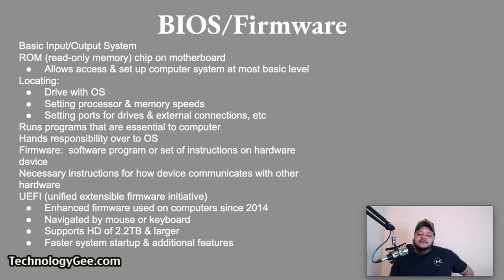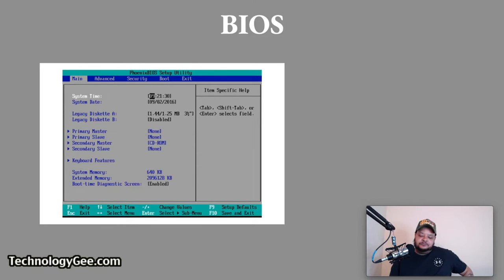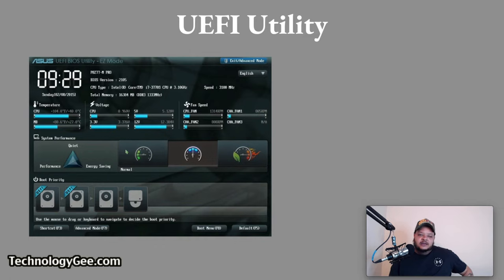UEFI firmware can be navigated with a mouse or a keyboard. It supports hard drives up to 2.2 terabytes and larger, and provides faster startup as well as additional features. Here is a screenshot of what you'll see if you go into the legacy BIOS — you have to use your keys and Tab button to navigate that menu. Here is what a UEFI looks like — you can use your mouse and click on things. This is what a typical UEFI interface looks like.